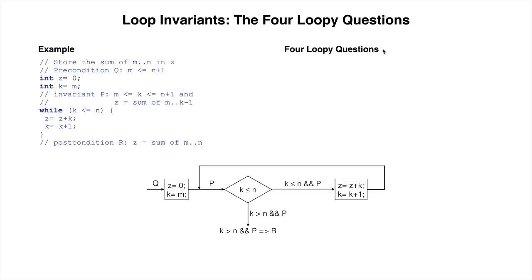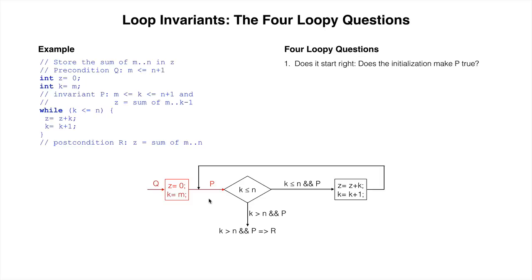The first loopy question is: does it start right? Does the initialization make p true? If we look at the beginning of the flowchart, given q true, execution of the initialization is supposed to ensure that p is true. For this loop, we can write it distinctly as shown at the bottom of your screen.